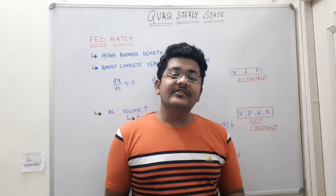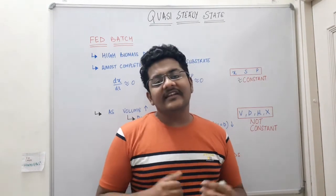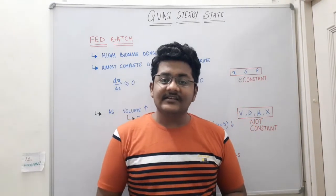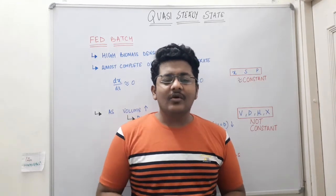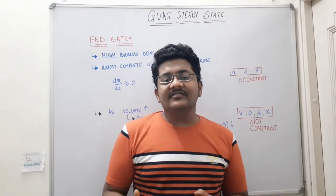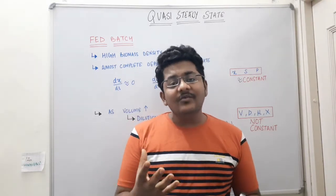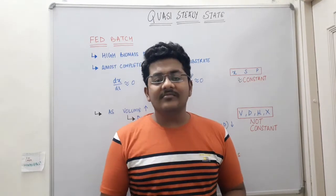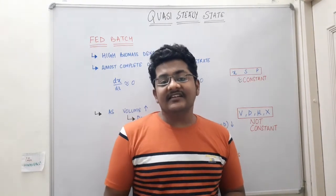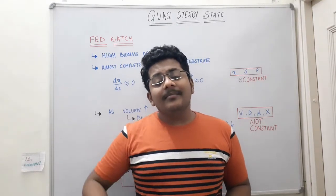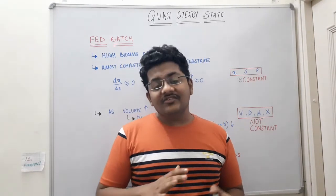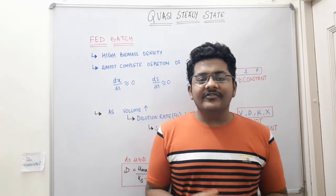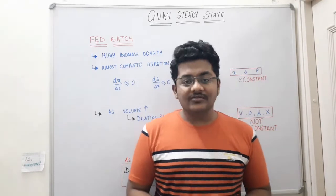In this video we are going to understand what is quasi steady state — a term you may have seen in numericals relating to fed batch culture. 'Quasi' means a thing which appears to be something but not really is. So quasi steady state is a state which appears like steady state but actually is not — it is not entirely steady state, but it appears like one because of some of its properties.